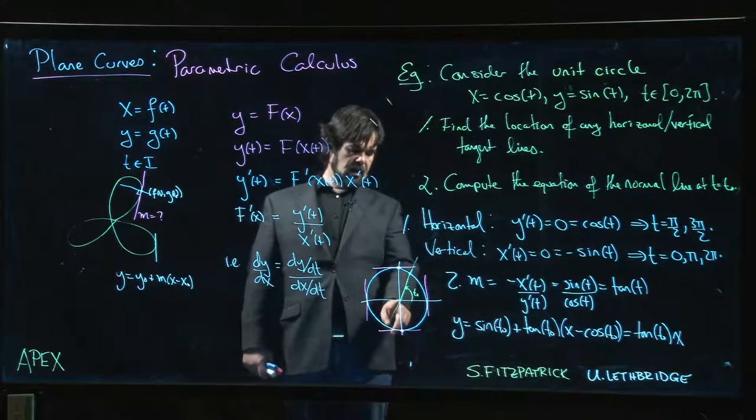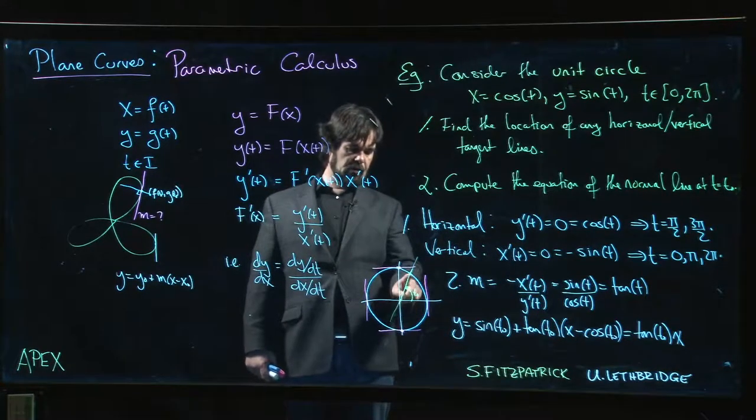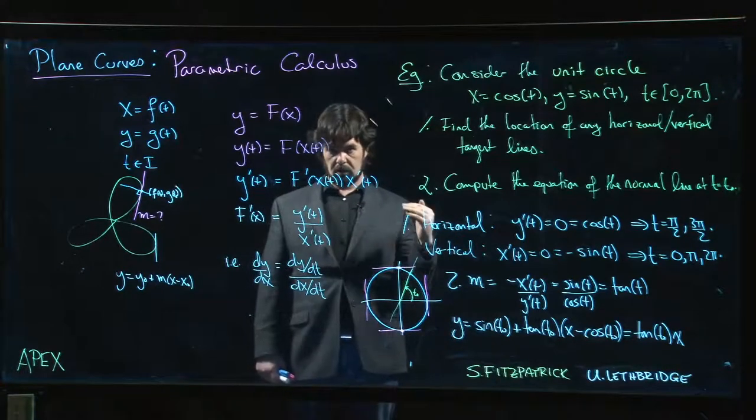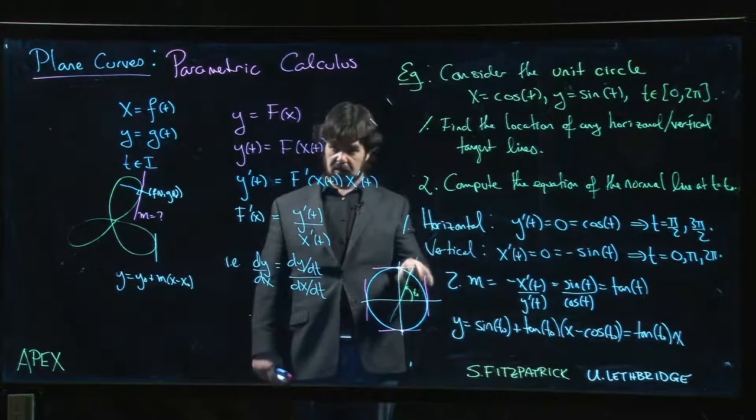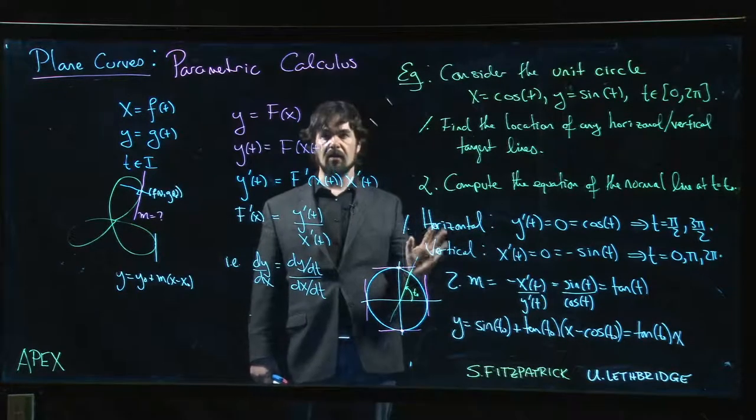The other thing being that any radius on a circle always intersects the circle perpendicularly. So we can see that here as well, that perpendicular intersection, because we do indeed have the normal line.